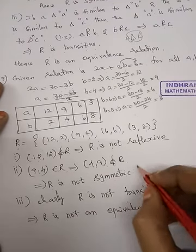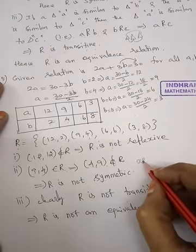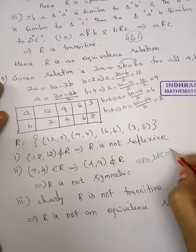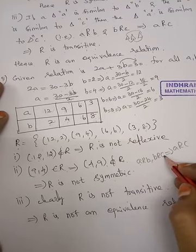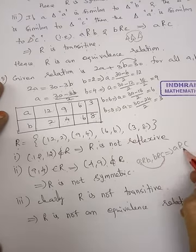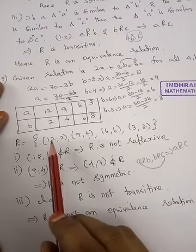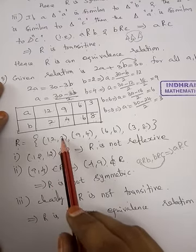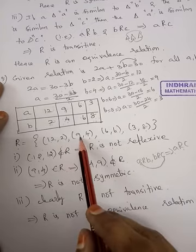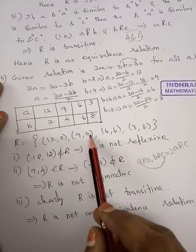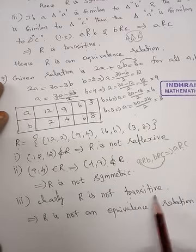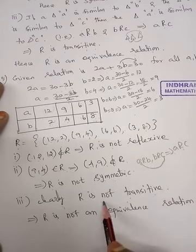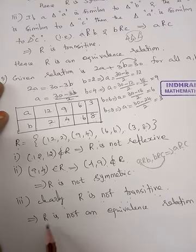Transitive means ARB, BRC which implies ARC. First to second relate, second to third relate, first and third relate. Check 12, 2 and 2 is not related to any third element. So it is not transitive. Clearly, R is not transitive, so R is not an equivalence relation.